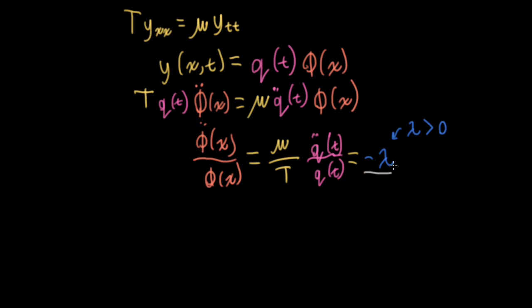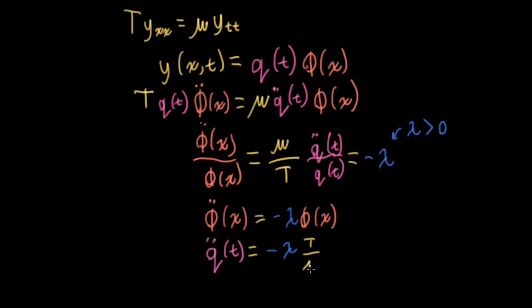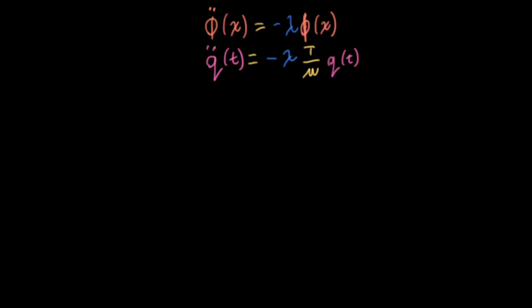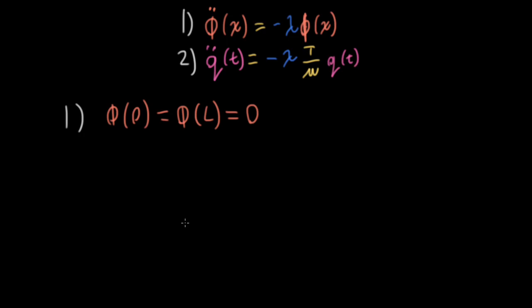From this I can write two ordinary differential equations: phi-double-dot = minus lambda times phi (ODE1), and q-double-dot(t) = minus lambda·T/mu·q(t) (ODE2). Looking at ODE1, remember we have boundary conditions — at the nut or bridge, at position zero or L, we have zero. When we see a differential equation like something-double-dot equals some constant times that something, we know the solution is a sinusoid, which we can write as a sum of a sine and cosine.